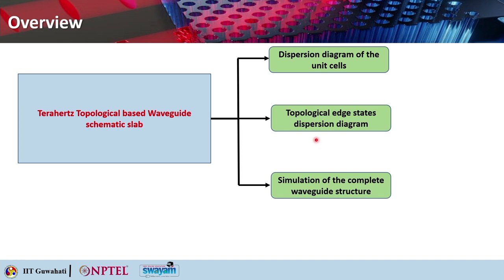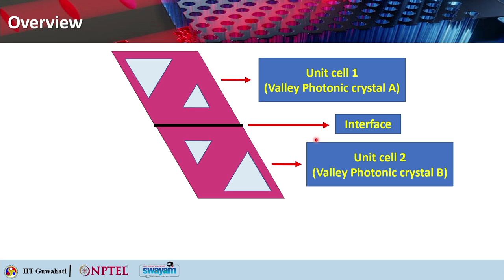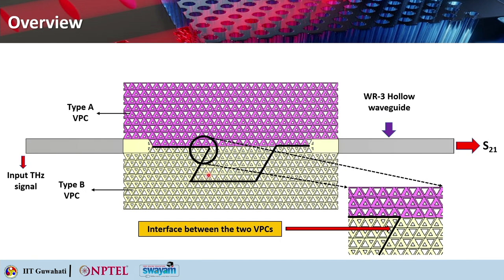All these things we understood from the dispersion diagram and the calculation of the topological edge states. Now we should go ahead and try to design the waveguide. In this particular tutorial video, we will be showing you with CST Microwave Studio Suite software. This is a quick recap of the two types of unit cell: this was VPCA and this is VPCB. This is unit cell 1, this is unit cell 2, and this is the actual structure.